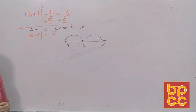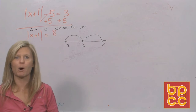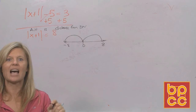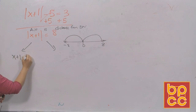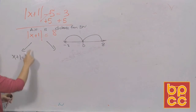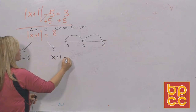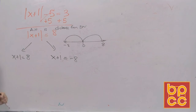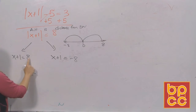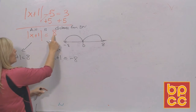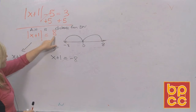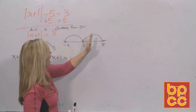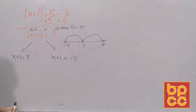To get rid of those absolute value bars, you're not multiplying, you're not squaring — you're going to rewrite this as two equations. The first equation: x plus 1 equals positive 8, meaning I moved to the right 8. The second equation: x plus 1 equals negative 8, meaning I moved to the left. The only thing that changed is the sign on the 8 — one is positive moving right from zero, one is negative moving left. That's your definition: absolute value is the distance you move from zero. Now you no longer have an absolute value equation — you have two simple linear equations to solve.